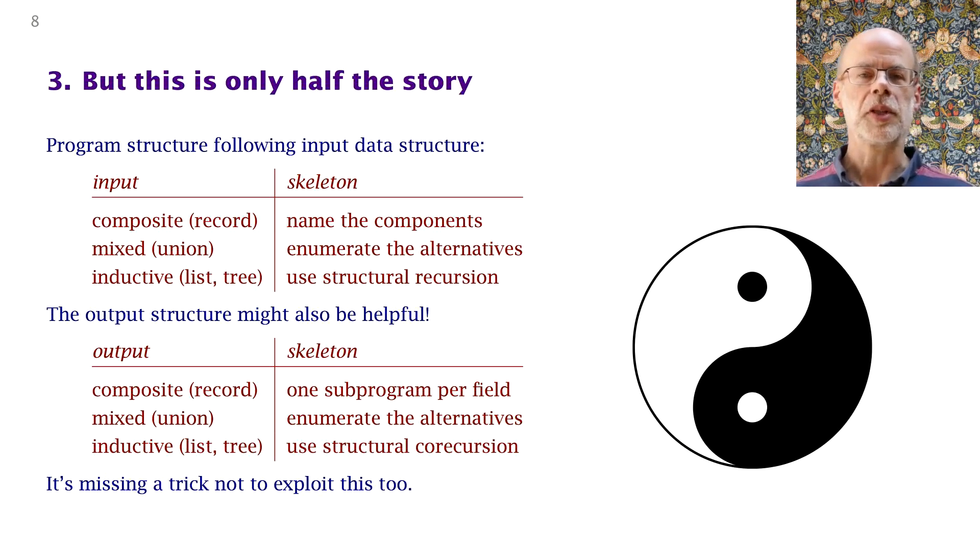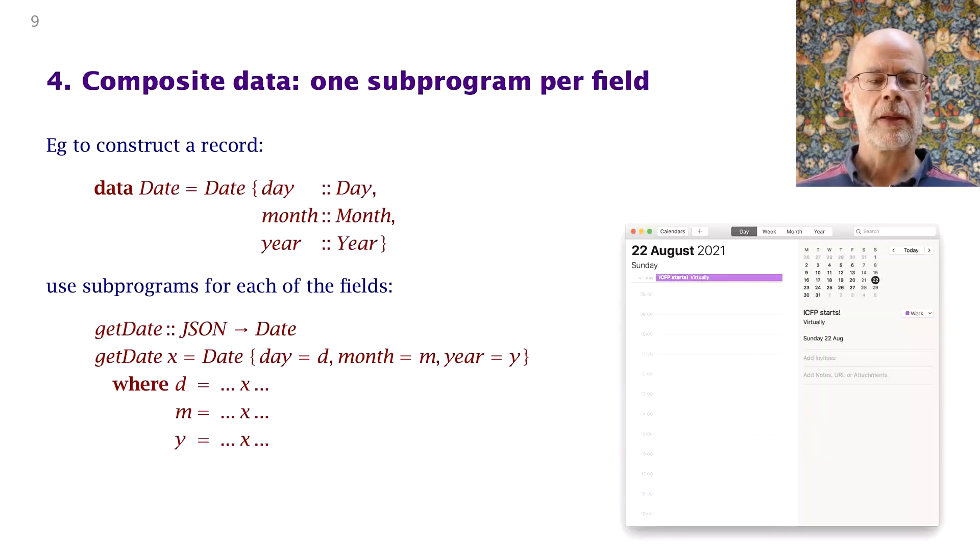So let's look at those design recipes again, but from the other side, looking at them from the perspective of output data structure. So now we're not consuming but producing a record. Here we're producing a date. A date has a day field, a month field, and a year field. So we're going to have to come up with a day and a month and a year. So let's name those. Let's have one sub-program per field, name those sub-programs D, M and Y, and then we have to construct the record out of D, M and Y.